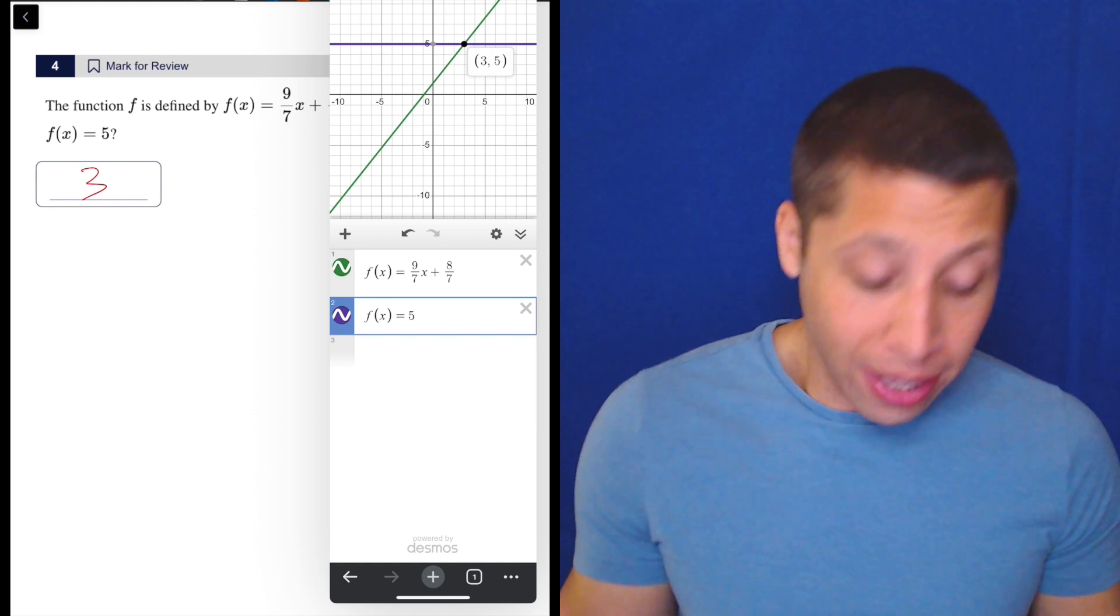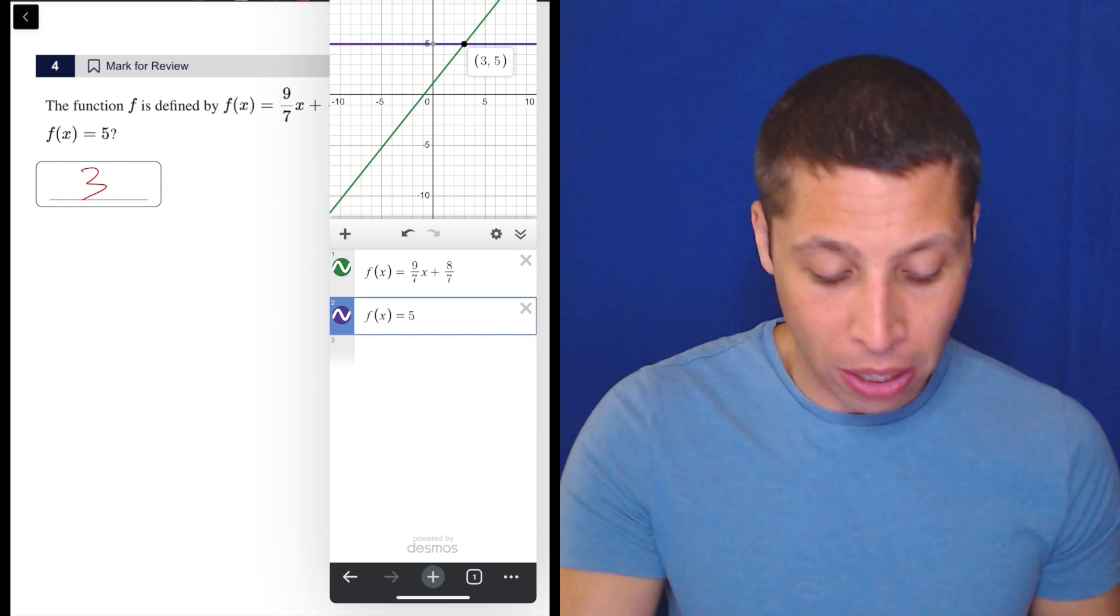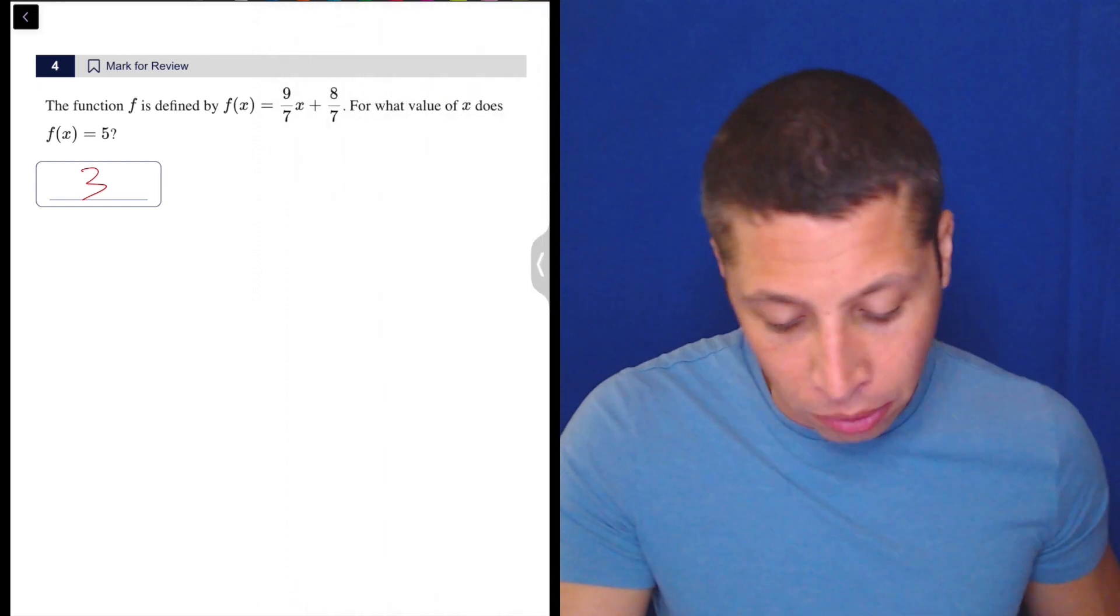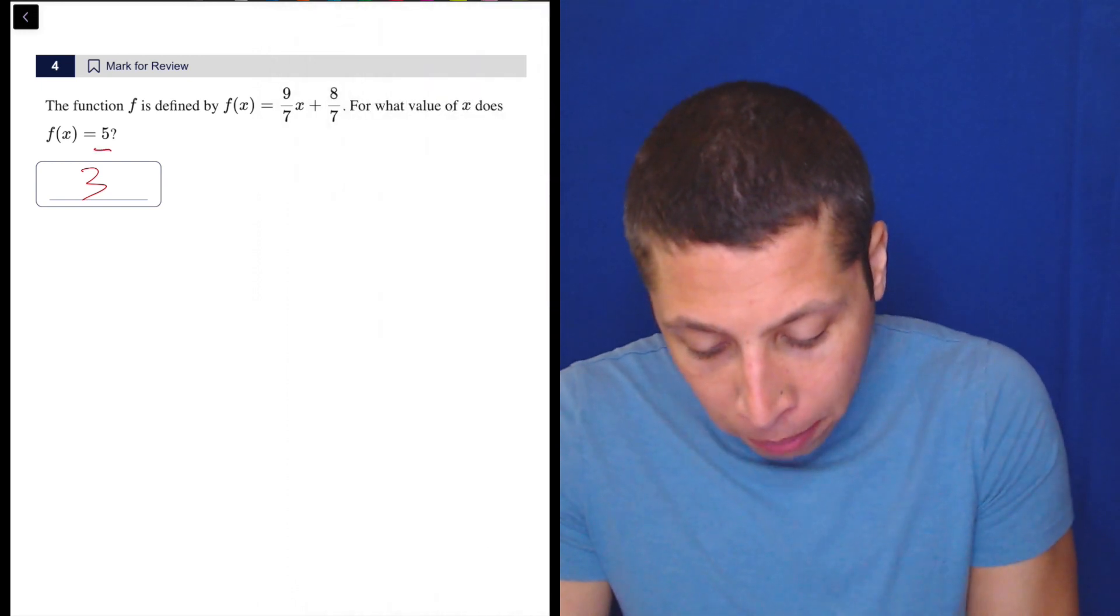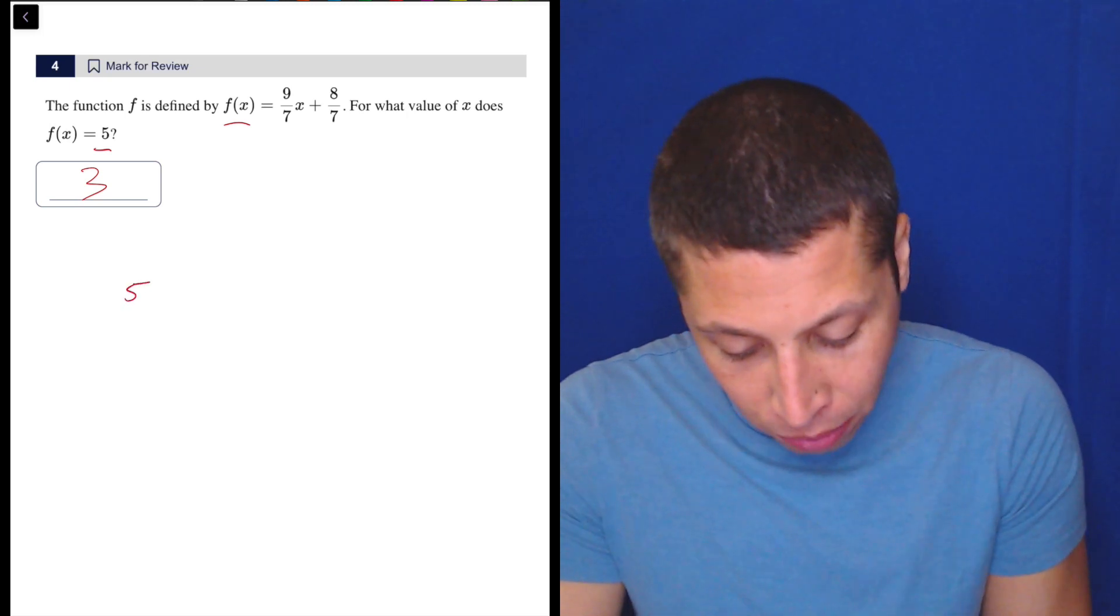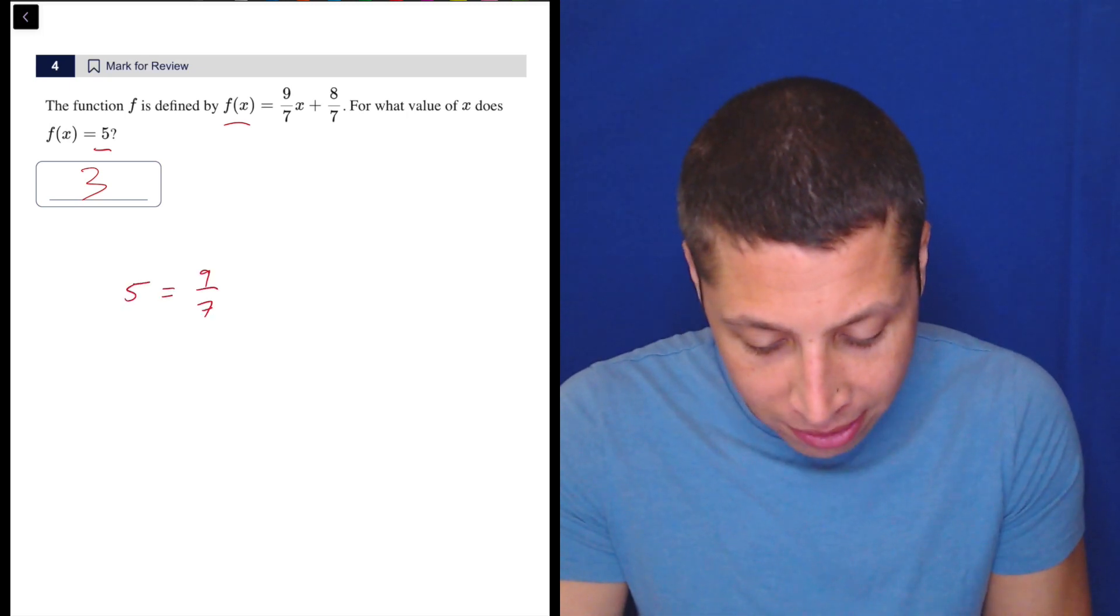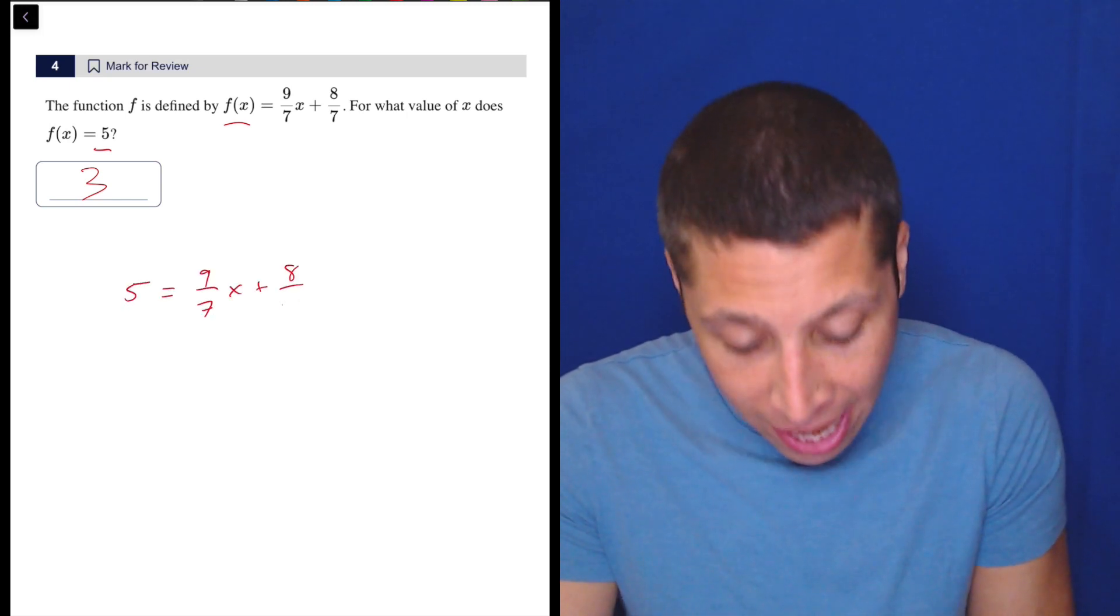So again, I love to have Desmos here just because... let's see, let's do the algebra real fast, it's not terrible, but remember, you've got to plug this in for the f(x). So 5 is equal to 9/7x plus 8/7.